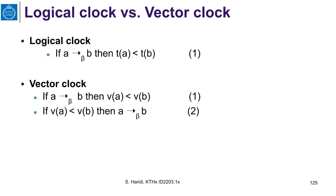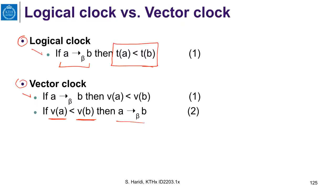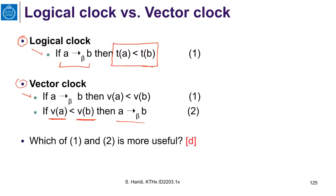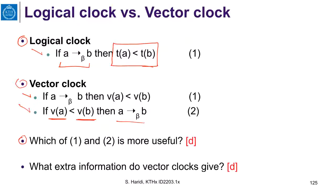In summary, logical clocks have the property: if A happens before B, then the Lamport timestamp of A is less than that of B. Vector clocks guarantee this same property, but also guarantee the converse: if the vector of A is less than the vector of B, then A happens before B. This implies that if two vectors are incomparable, the two events are concurrent. You can discuss in the discussion group which of these properties is more useful and what extra information vector clocks give us.